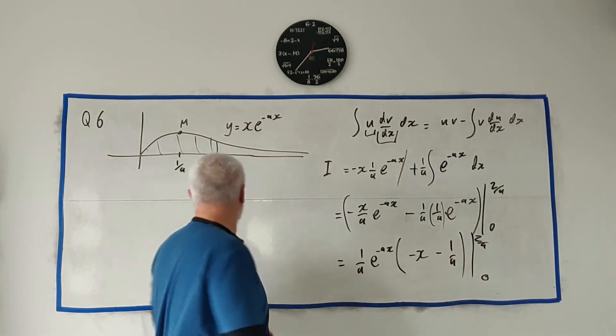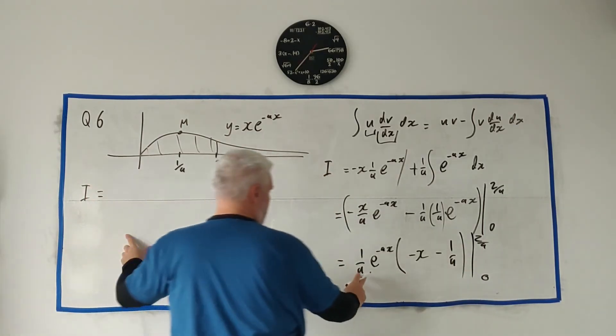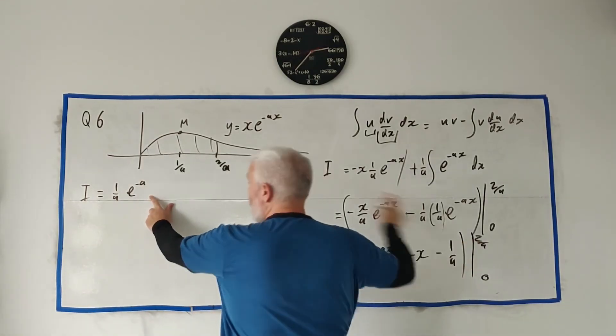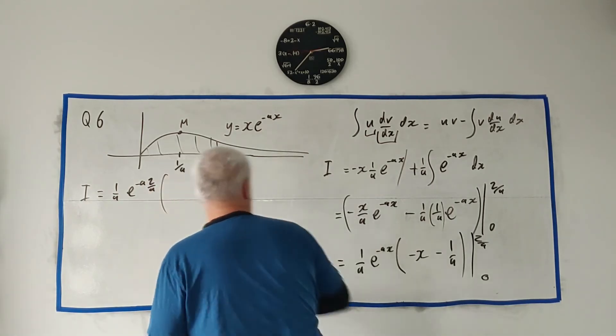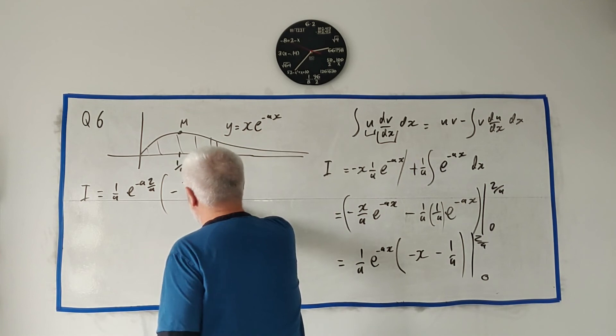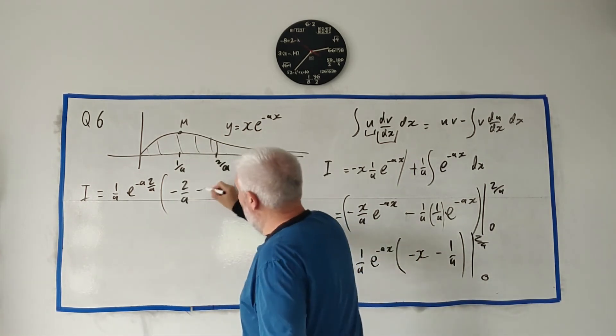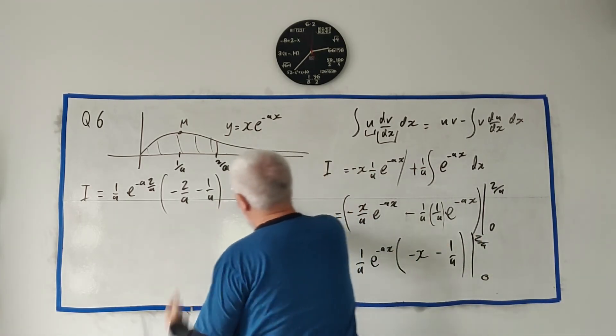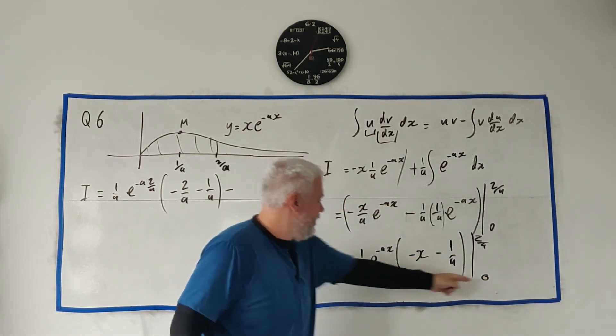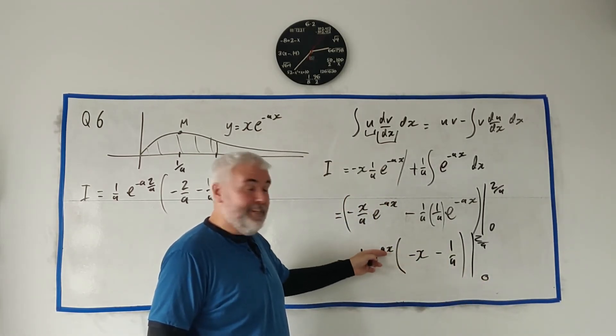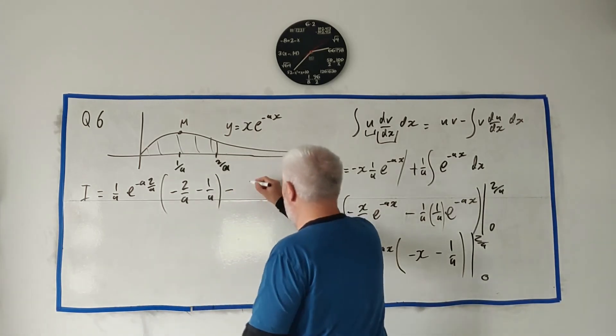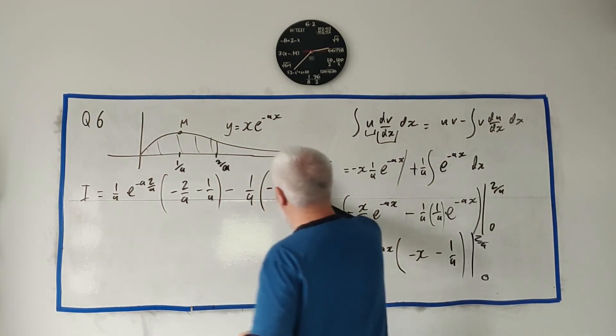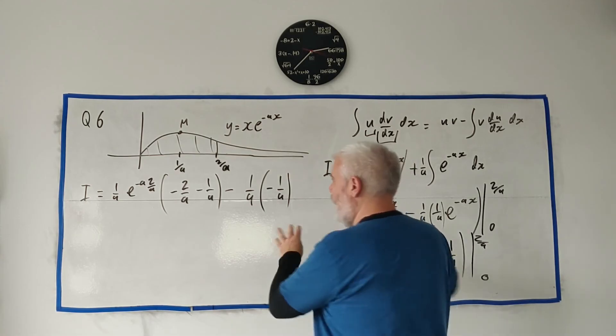Let's put this in. When x = 2/a: I = (1/a)e^(-2)(-2/a - 1/a). When x = 0: e^0 = 1, so we're left with (1/a)(0 - 1/a). That's it, we just clean this up.